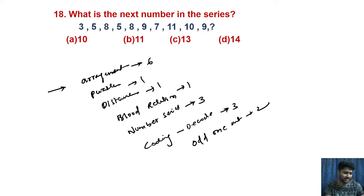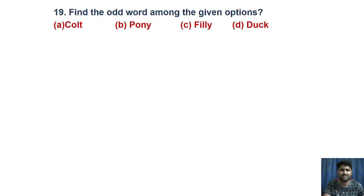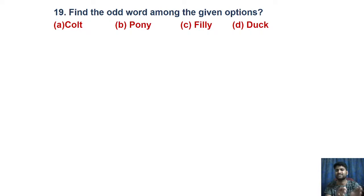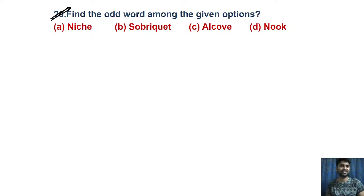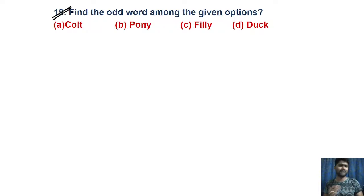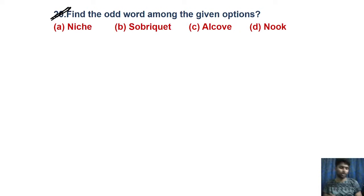These are the two odd one out questions for you — just go through them. Identify what is the odd one out among all the options and post your answer in the comment section. I need a brief explanation of why you are choosing one option as different from the remaining three. Go through question 19 and question 20 and give your explanation — for example, if you choose 'Pony' or 'Nook,' explain why.